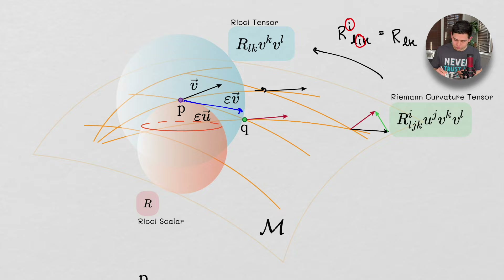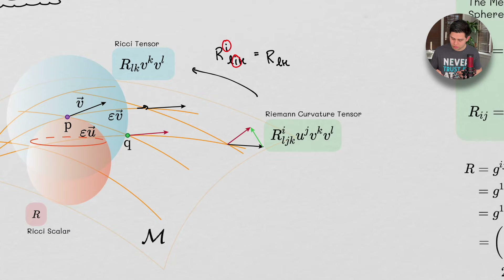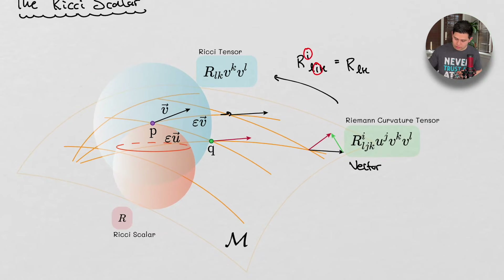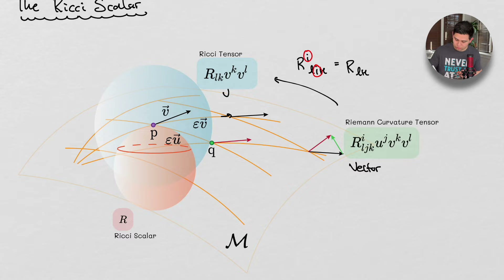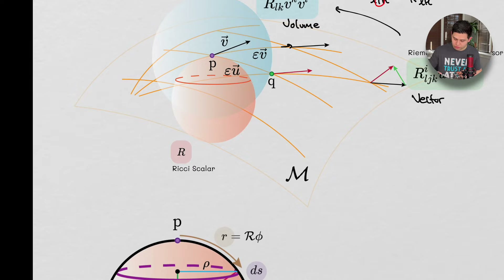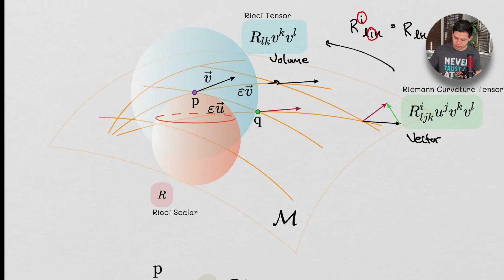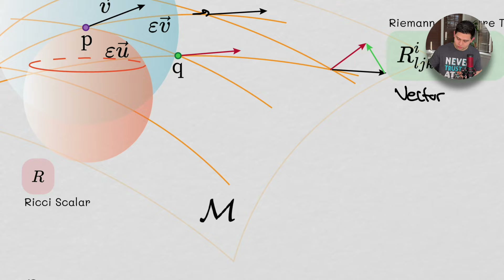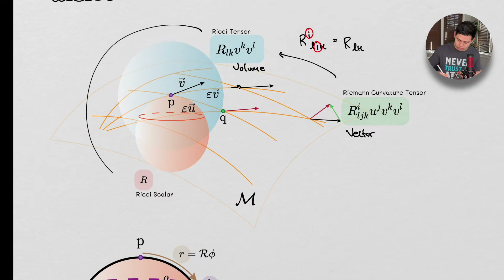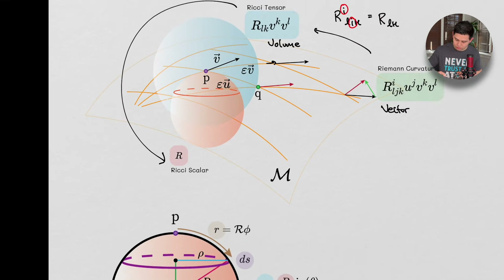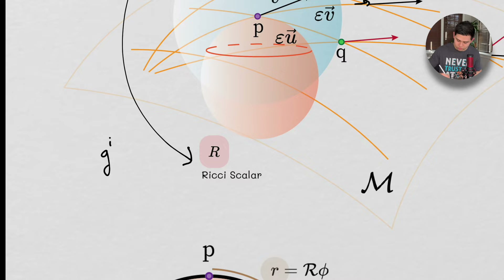So in summary: vector changes from the Riemann tensor, contraction gave us volume changes in the Ricci tensor, and further contraction — specifically contracting the Ricci tensor with the metric G^LK — gives us the Ricci scalar.